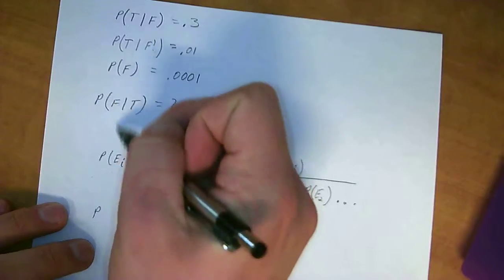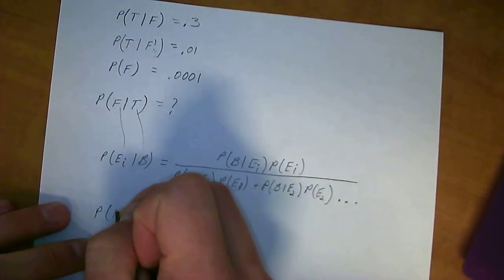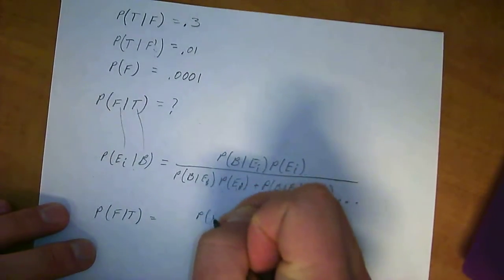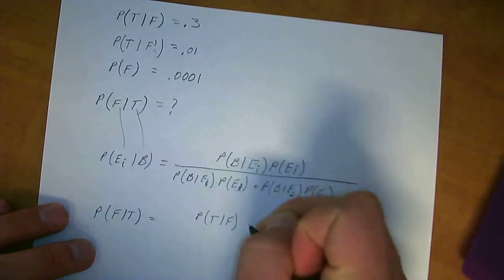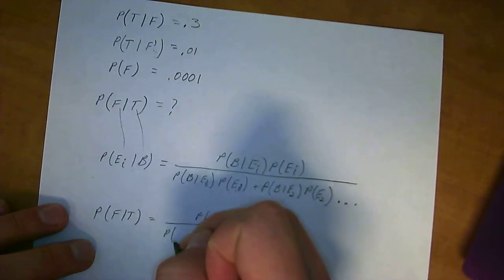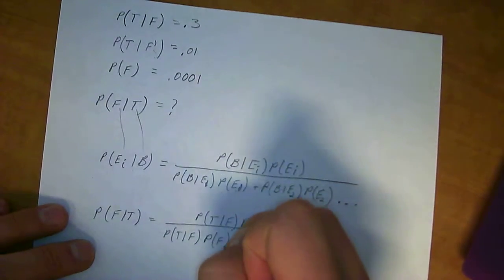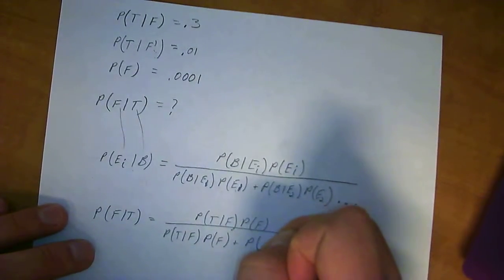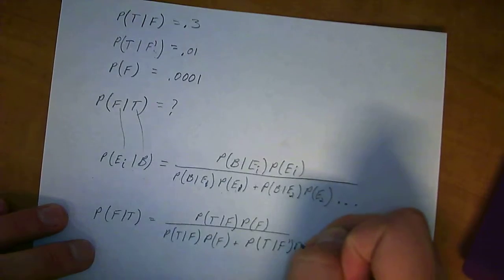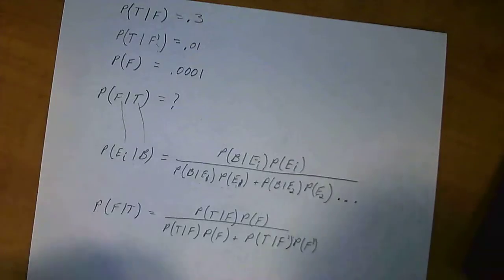The way to define this out is we're going to do the probability. You can just line up these variables right here to figure out where they go in this equation. So the probability of F given T is equal to the probability of two or more calls given fraudulent times the probability of fraudulent, all over the probability of two or more calls given fraudulent times the probability of fraudulent, plus the probability of two or more calls given not fraudulent, or legitimate, times the probability of not fraudulent.